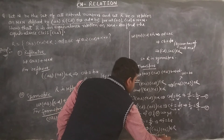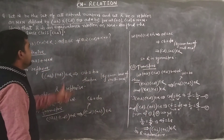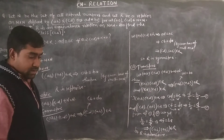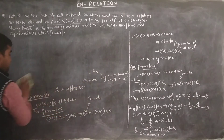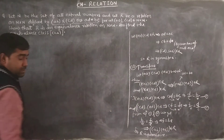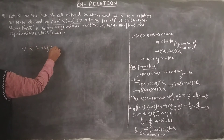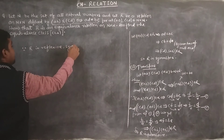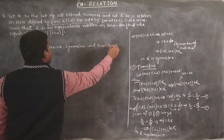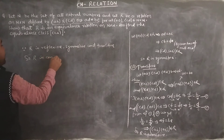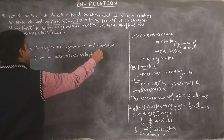Since R is reflexive, symmetric, and transitive, R is an equivalence relation on N×N.